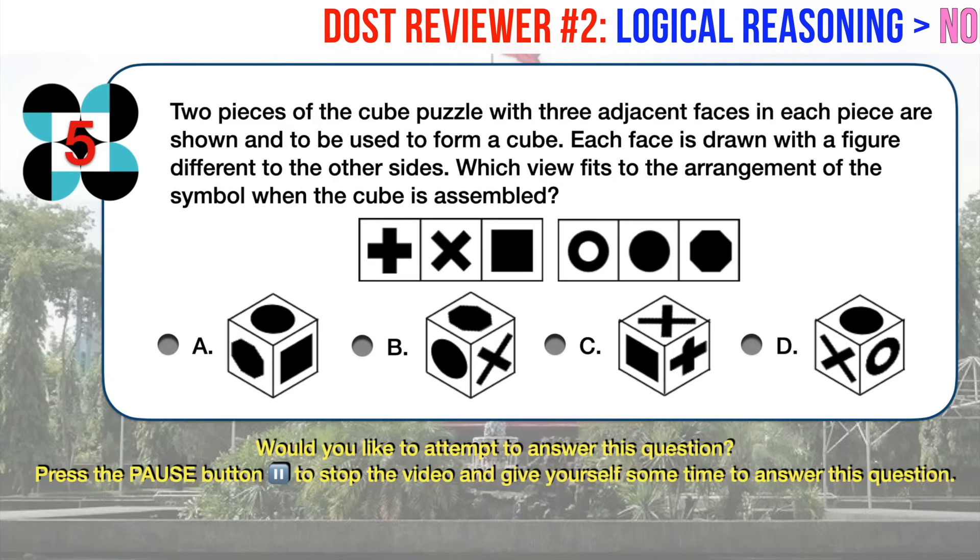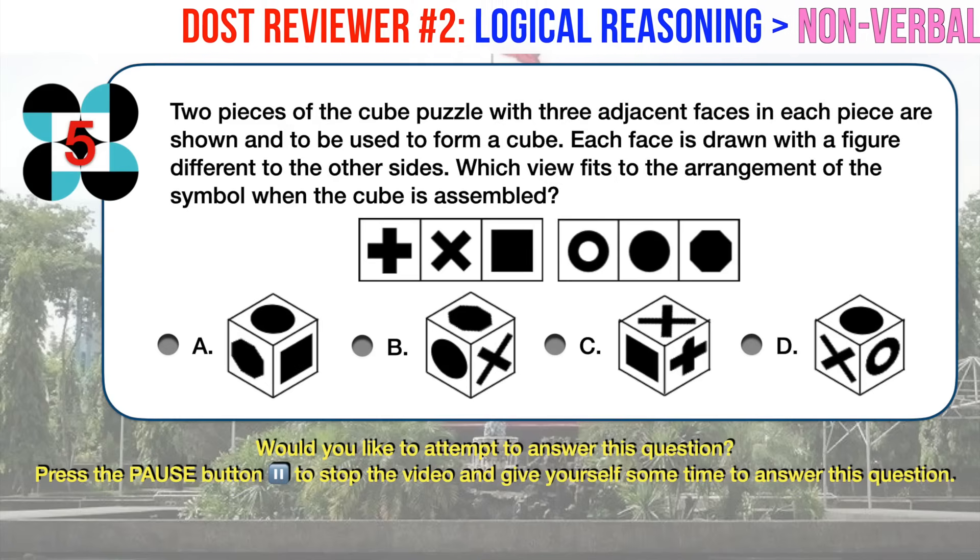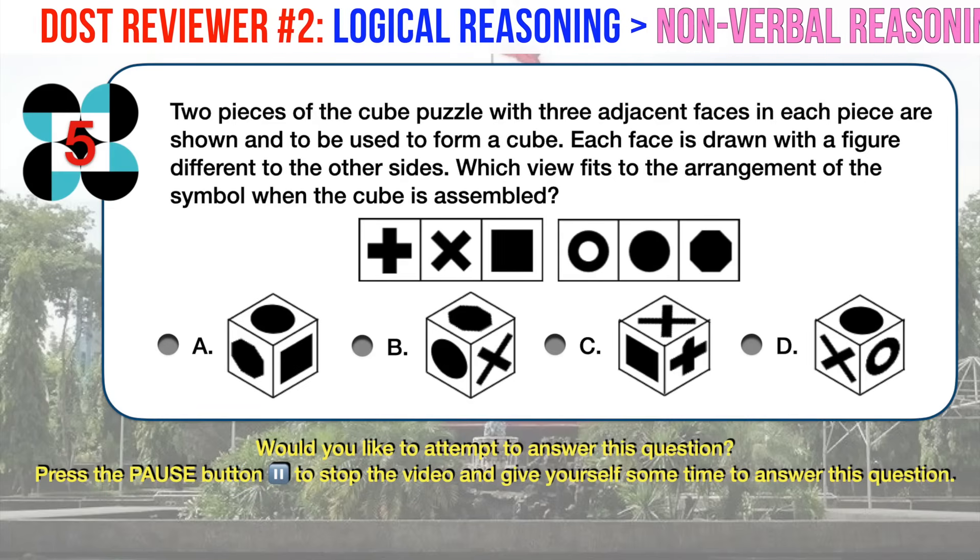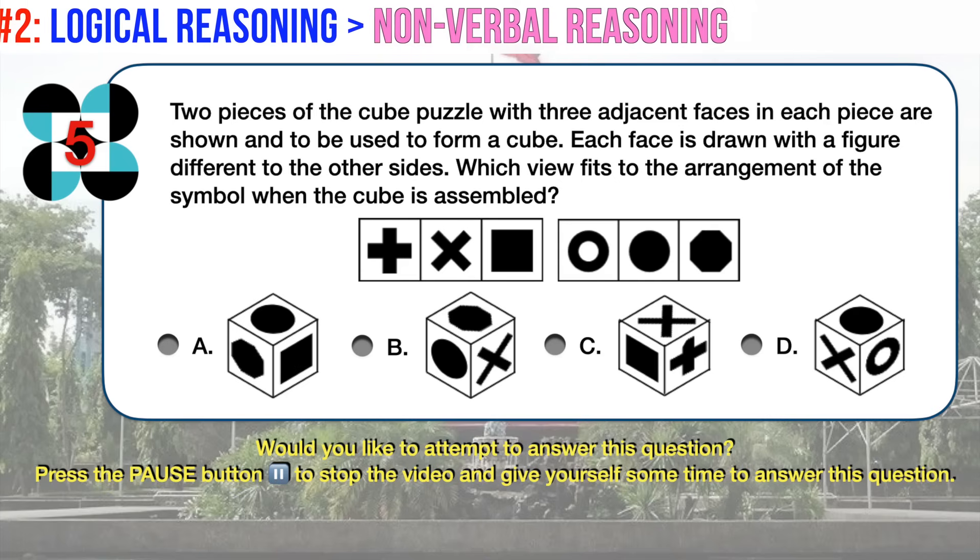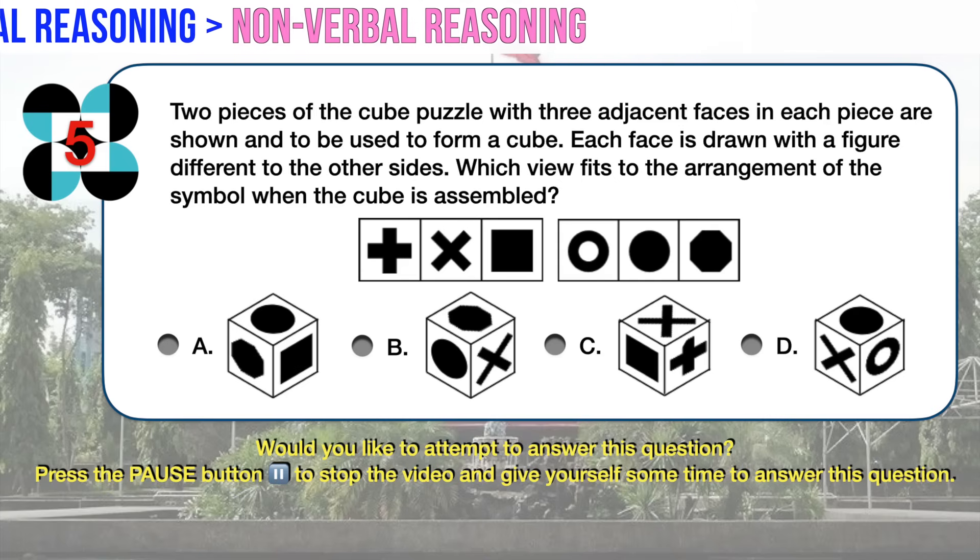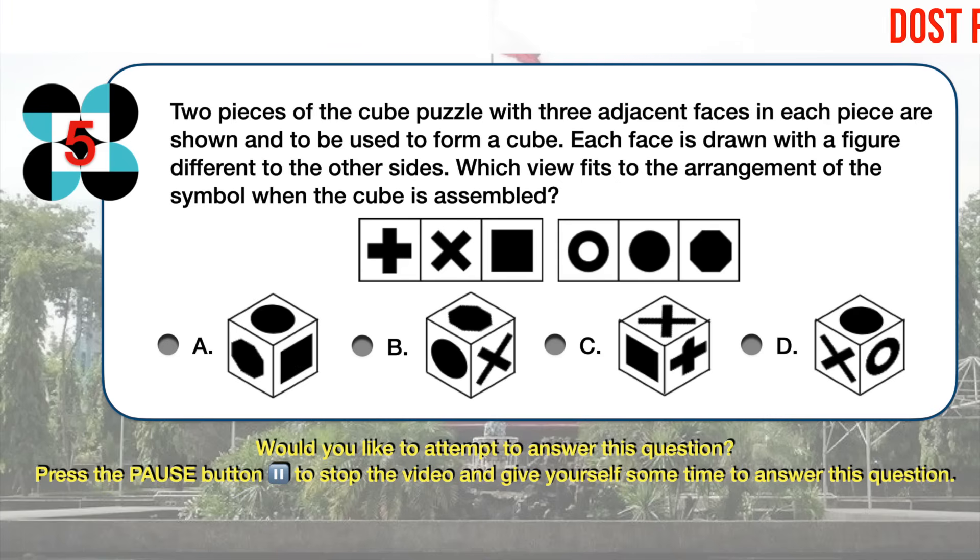Nonverbal Reasoning Number 5. Two pieces of the cube puzzle with three adjacent faces in each piece are shown and to be used to form a cube. Each face is drawn with a figure different to the other sides. Which view fits the arrangement of the symbols when the cube is assembled?